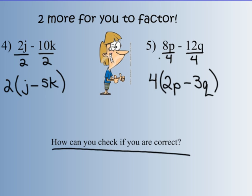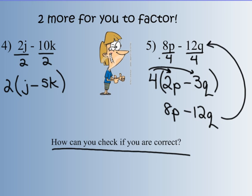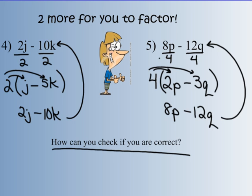A great note — how can you check that you're correct? Re-multiply using the distributive property. Take 4 and multiply it by 2p — I get 8p. 4 multiplied by negative 3q — negative 12q. Did I get back to my original binomial? Yes. So I know I factored it correctly. Let's check number 4: 2 times j gives 2j; 2 times negative 5k gives negative 10k. Did I get back to the original expression? Yes. So re-multiplying with the distributive property is a good way to check that you're factoring correctly.